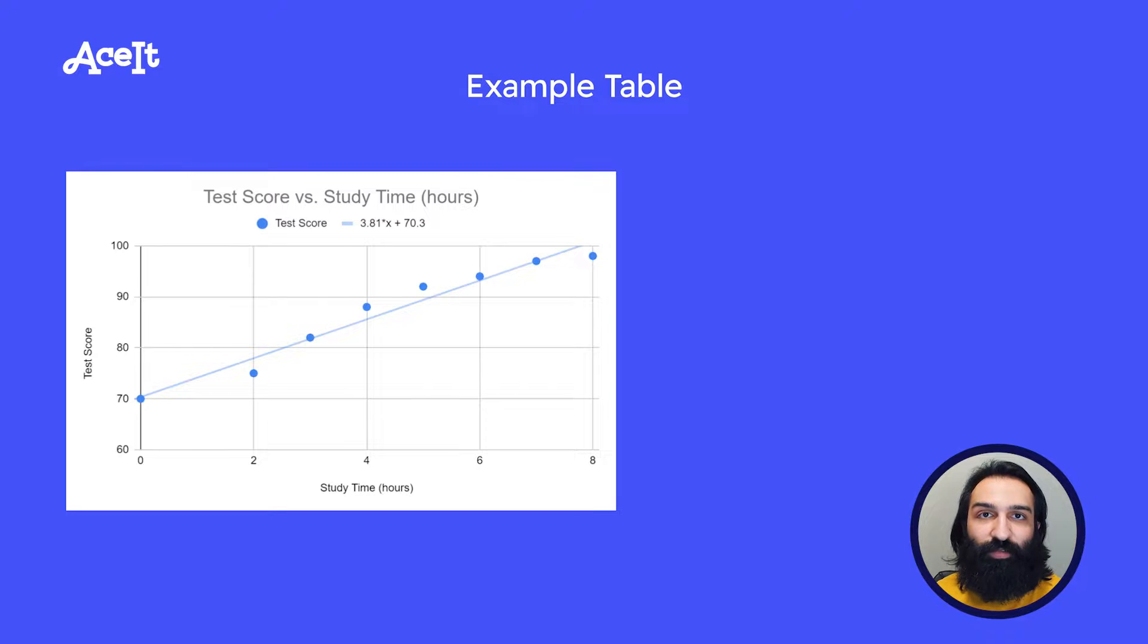A scatter plot is a graph with two axes. Each point on the graph represents a pair of data. Let's see how these two work together.